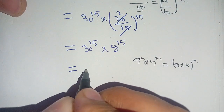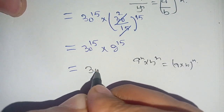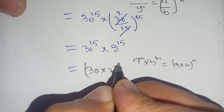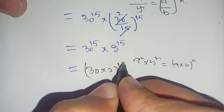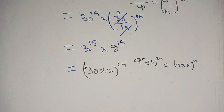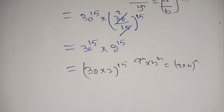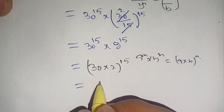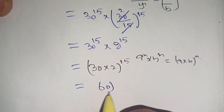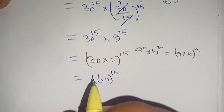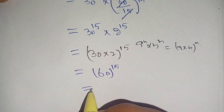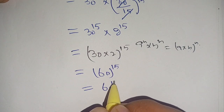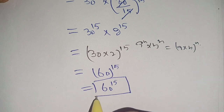Now we have the identity: a power n times b power n is equal to (a times b) whole power n. By using this identity we can write it as (30 times 2) whole power 15. Now we can multiply 30 times 2, it becomes 60 whole power 15. Thus it is equal to 60 power 15.